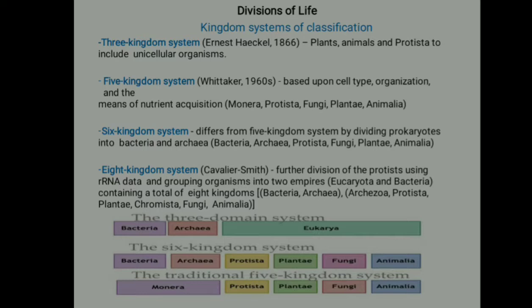The Eight Kingdom system was proposed by Cavalier-Smith, who further divided Protista using rRNA data, grouping organisms into two empires — Eukaryota and Bacteria — containing a total of eight kingdoms: Bacteria, Archaea, Archeozoa, Protista, Plantae, Chromista, Fungi, and Animalia. The Three Domain system includes Bacteria, Archeozoa, and Eukarya.